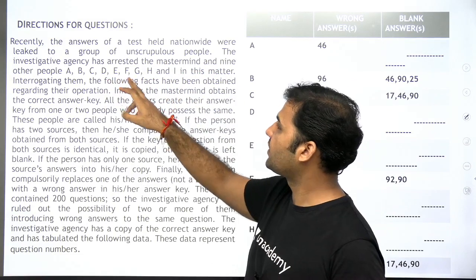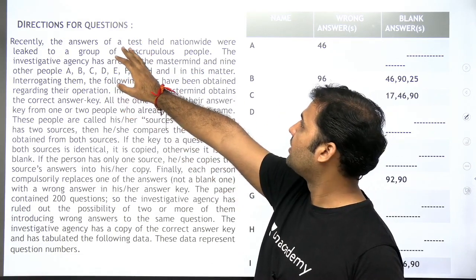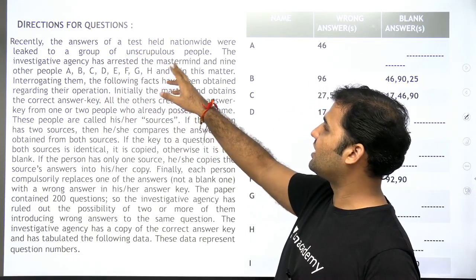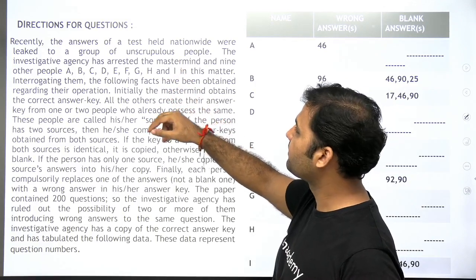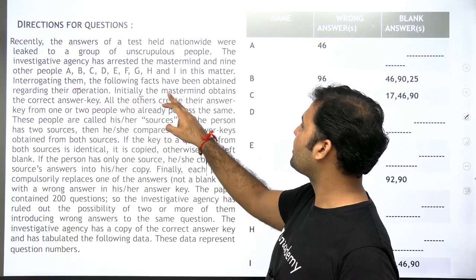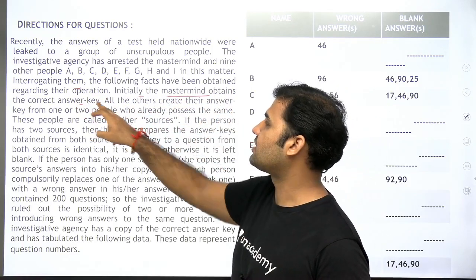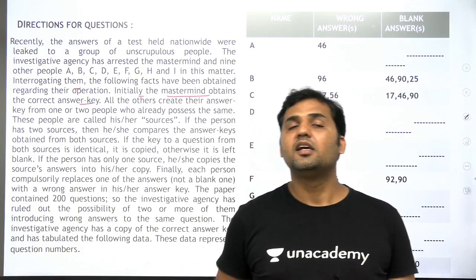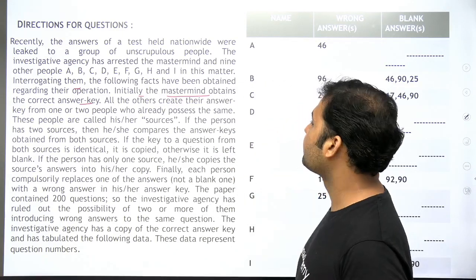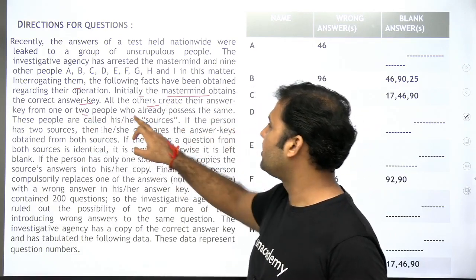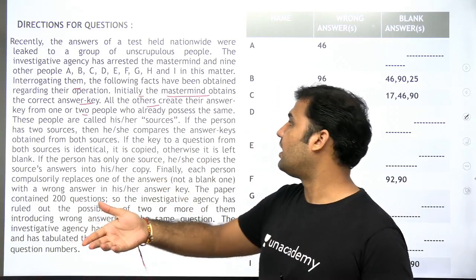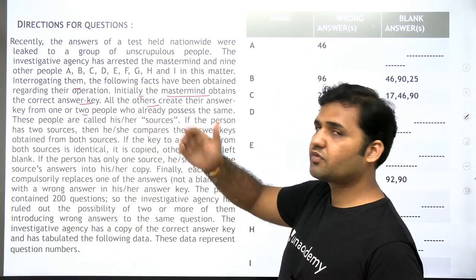So this nationwide test was leaked. There are nine persons: A, B, C, D, E, F, G, H, I, and there is one person who is called the mastermind. Now, interrogating them, the following facts have been obtained regarding their operation. Initially the mastermind obtained the correct answer key. All the others receive the answer key from one or two people who already possess it.